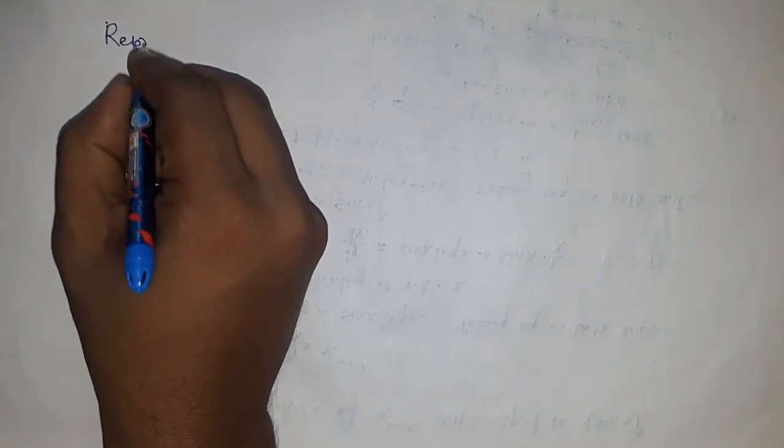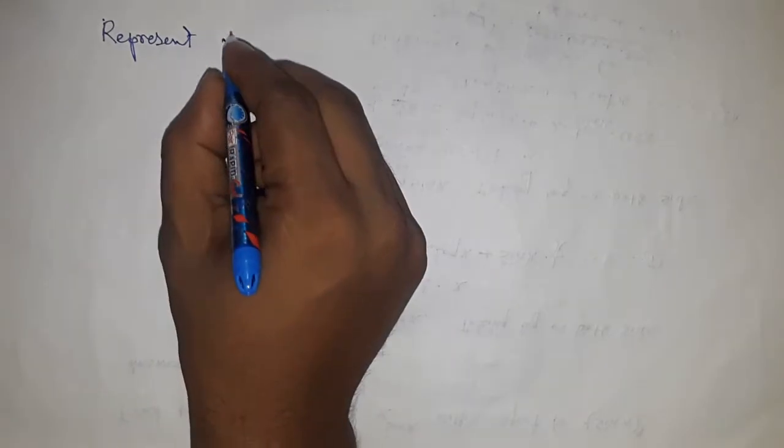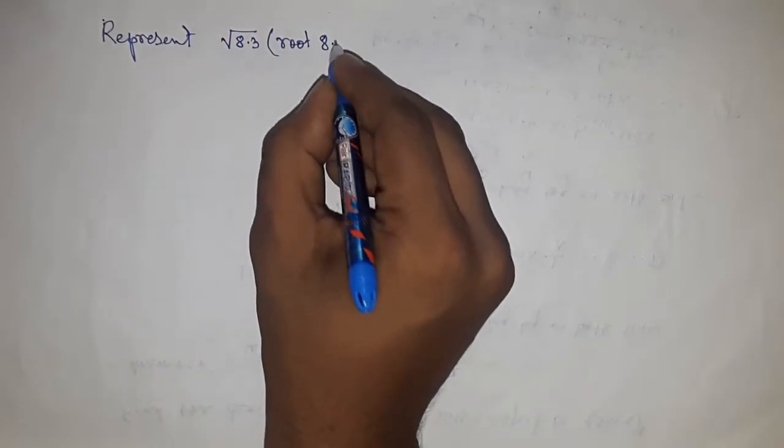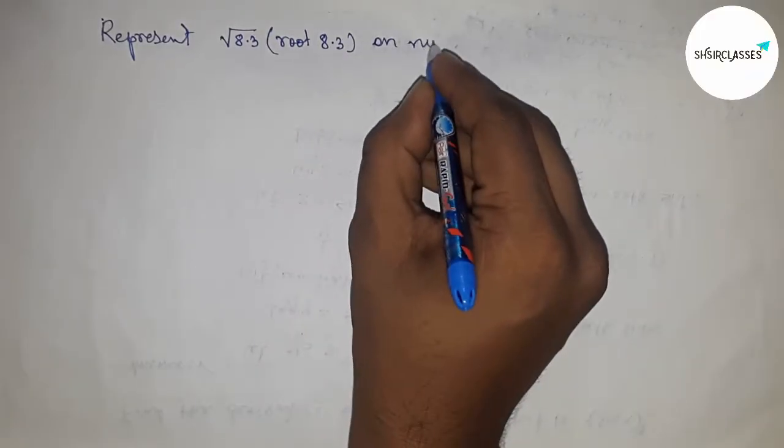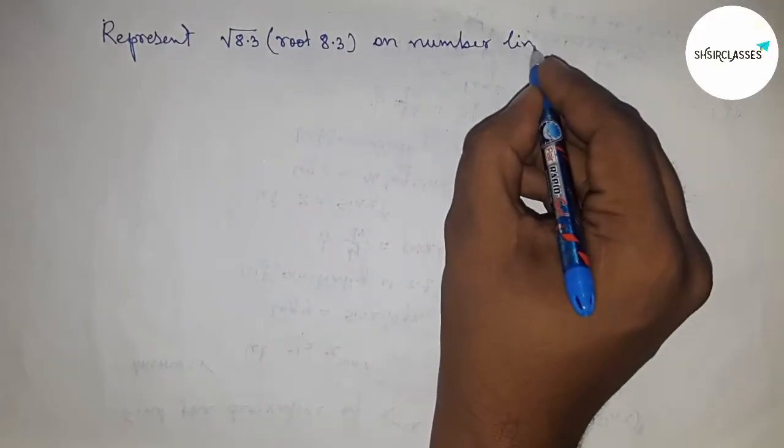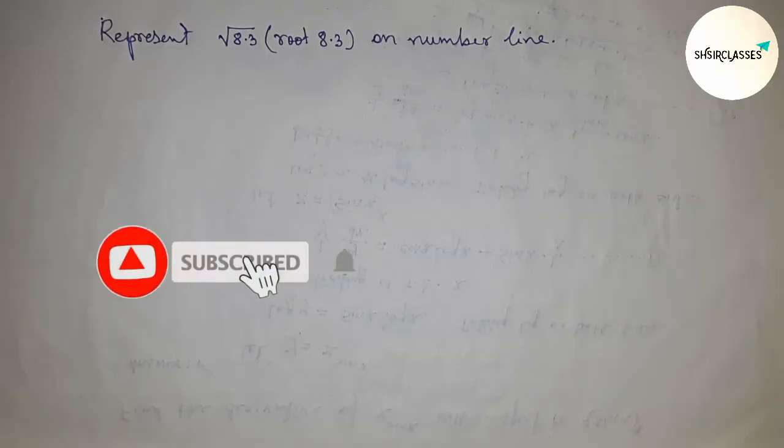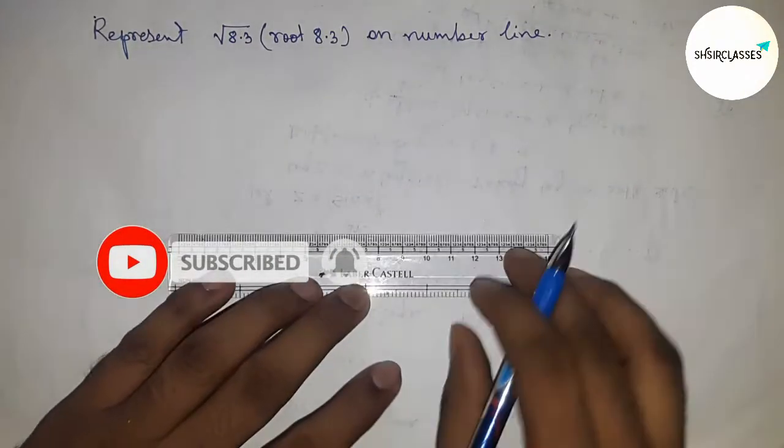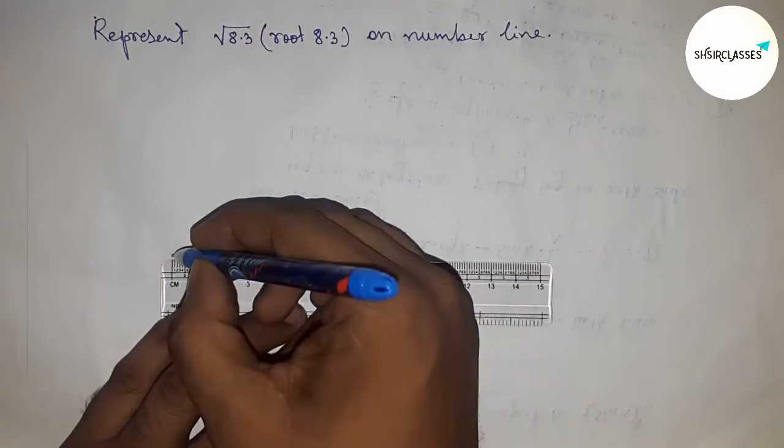Hello students, welcome to Assisted Classes. Today we're talking about the representation of √8.3 on the number line. Before starting the video, I have one request: please subscribe to the channel and press the bell icon for future video notifications. Let's start. First of all, draw a line of any length.